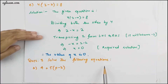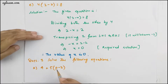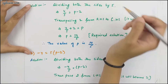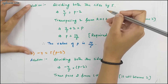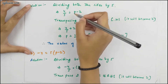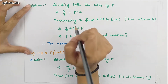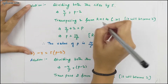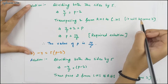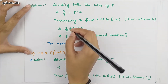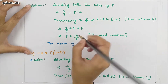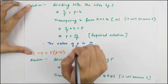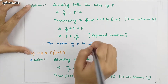Moving to our next question: solve the following equations. The first part is 4 = 5(p − 2). Dividing both sides by 5, we have 4/5 = p − 2. Transposing 2 from RHS to LHS, so 4/5 + 2 = p, giving us the value of p = 14/5.